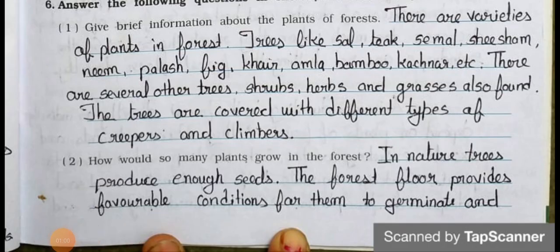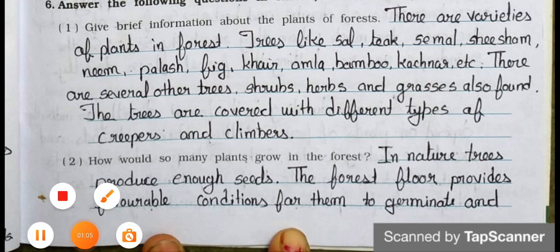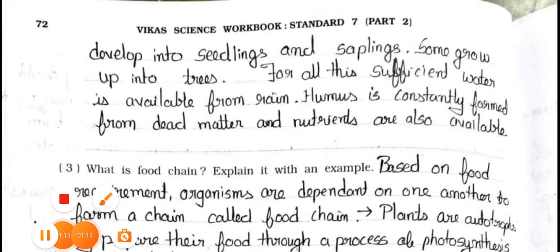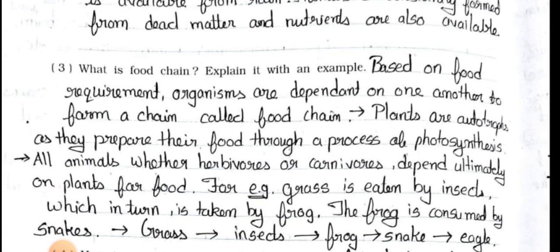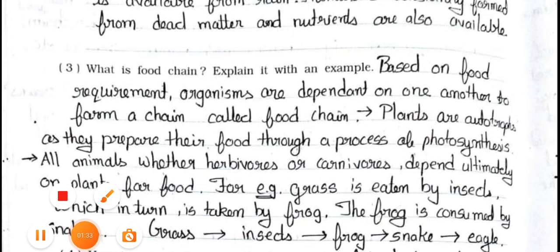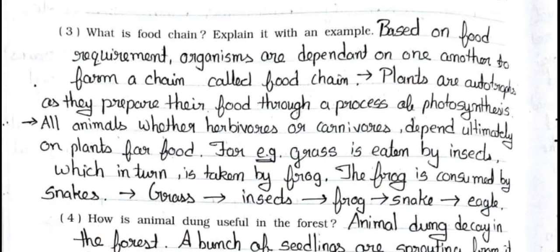Question number two: How do so many plants grow in the forest? Answer: In nature, trees produce enough seeds. The forest floor provides favorable conditions for them to germinate and develop into seedlings and saplings, and some grow up into trees. For all this, sufficient water is available from rain. Humus is constantly formed from dead matter and nutrients are also available.